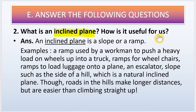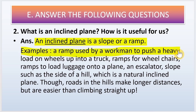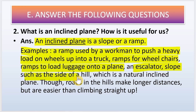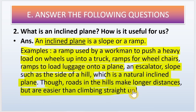Second long answer: what is an inclined plane and how is it useful for us? An inclined plane is a slope or a ramp. Examples include a ramp used by workmen to push a heavy load on wheels into a truck, ramps for wheelchairs, ramps to load luggage onto a plane, an escalator, and slopes such as the side of a hill which is a natural inclined plane. Roads in the hills make longer distances but are easier than climbing straight up.